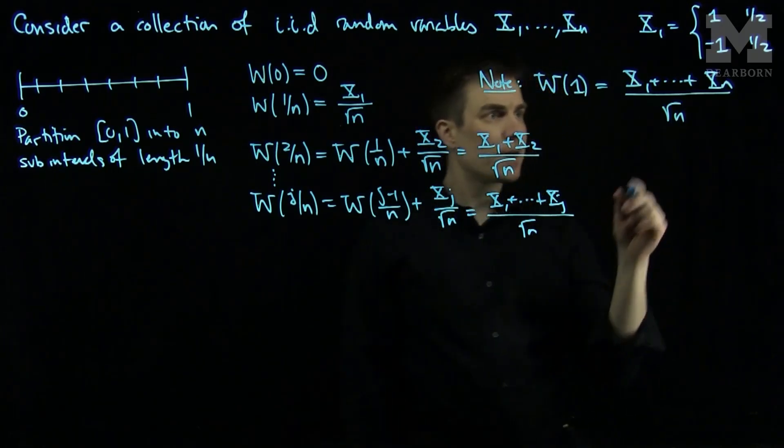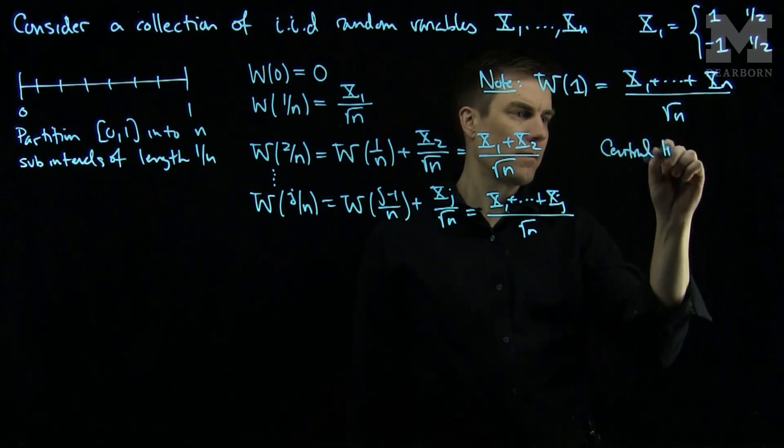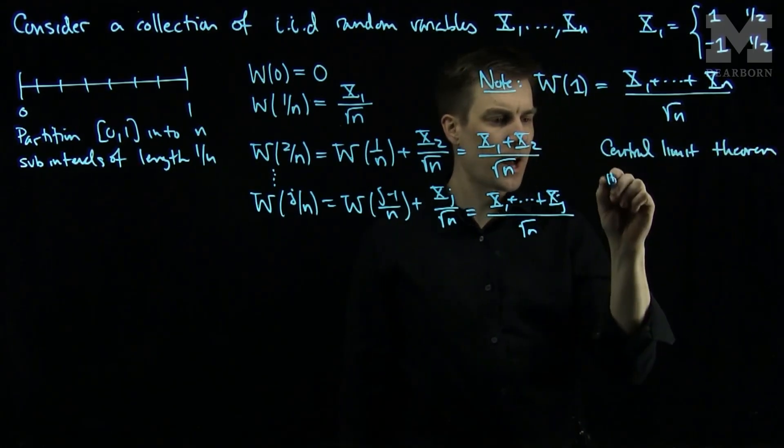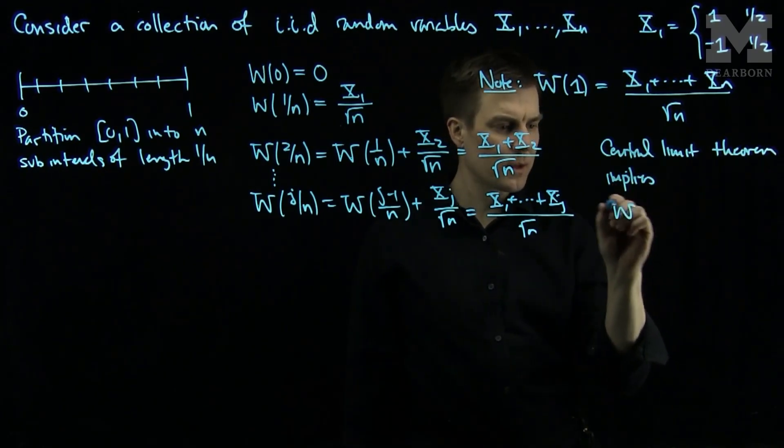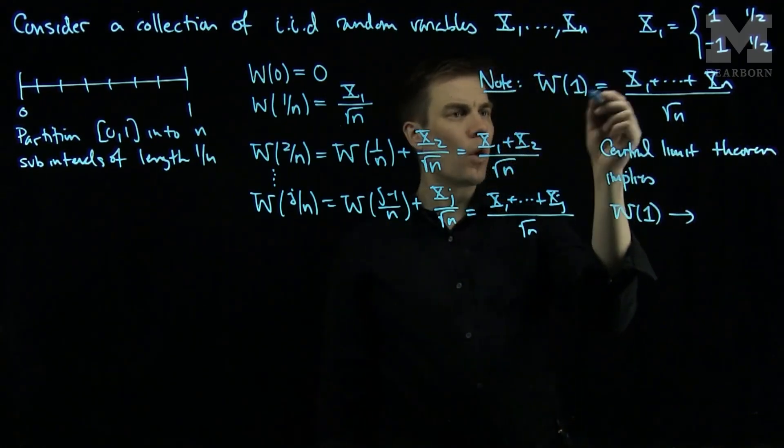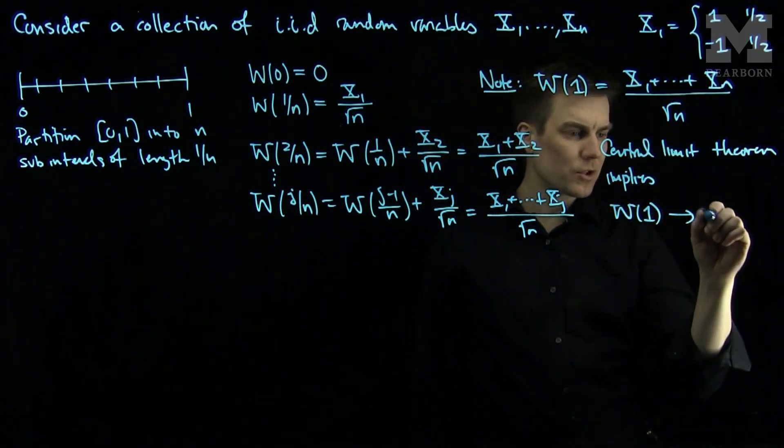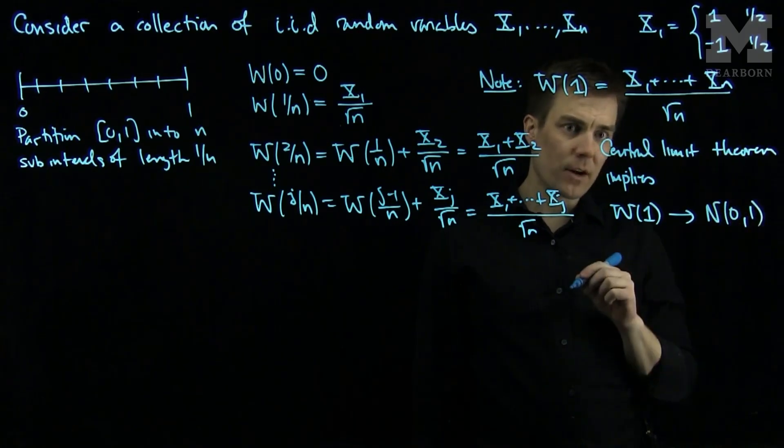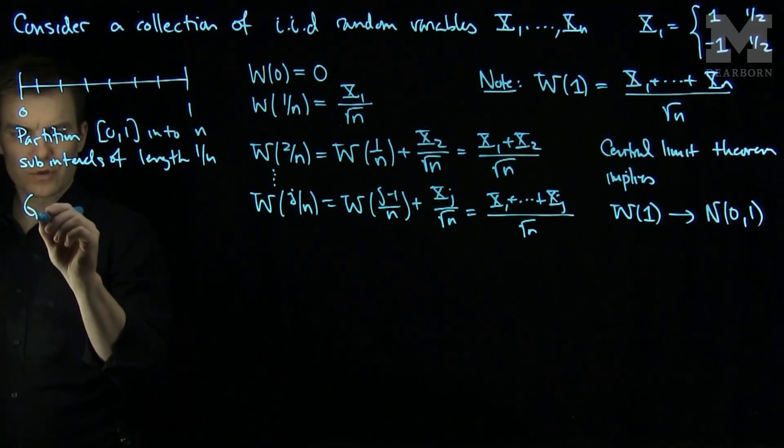And we can see that the central limit theorem implies that w1 converges. And w1 is really a function of n, so all these things have n dependence in them. w1 converges to a normal random variable with mean 0 and variance 1. So generically, generally...